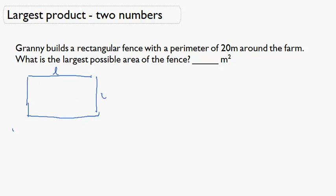L and W, let's say L is the length, width is W, and we know that the perimeter is 20. So that means L plus W, this is W, this is L.